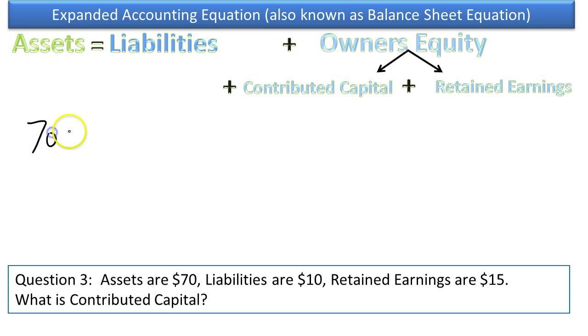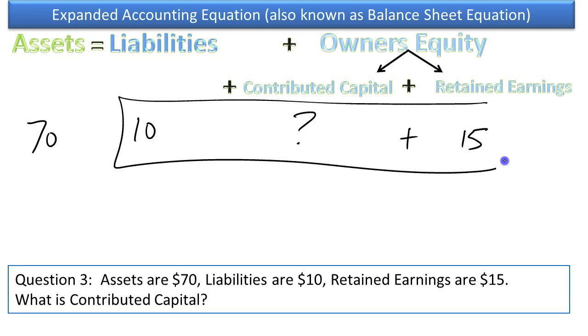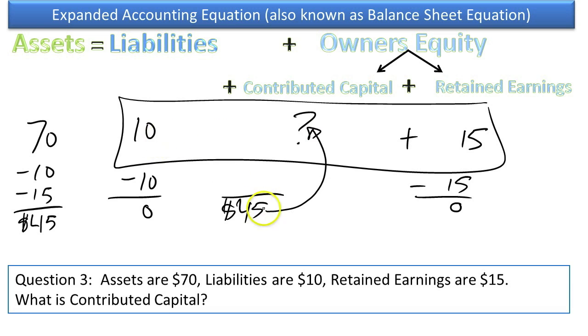In this case, we've been given assets of 70, liabilities are 10. Again, we've been given the retained earnings this time, but we don't know how much the owners have contributed. The bottom line is this must add up to $70 in order to keep this balance sheet equation in balance. We're going to go ahead and get contributed capital by itself, so deduct 10 from both sides, deduct 15 from both sides. What we get is $70 minus $25, and you get $45. Now, one last thing you should do, once you feel that you've got the right answer, put it back into the original equation. $10 plus $45, that's $55, $65, $70. So, you've proven it out, and you know that contributed capital is $45.